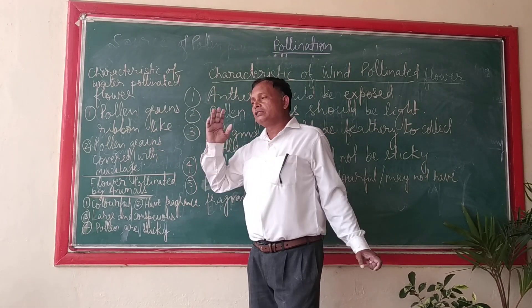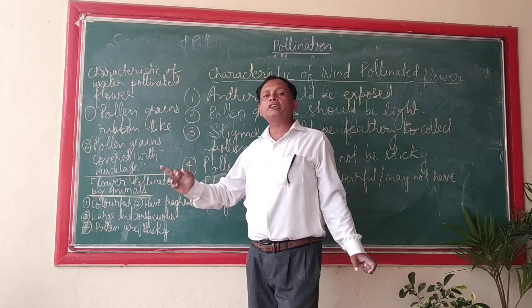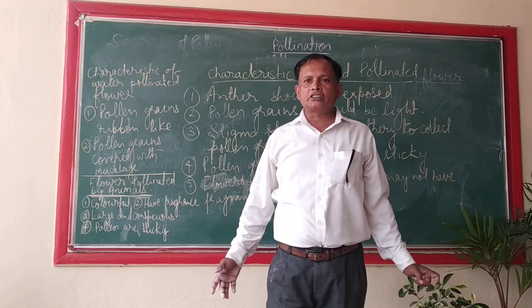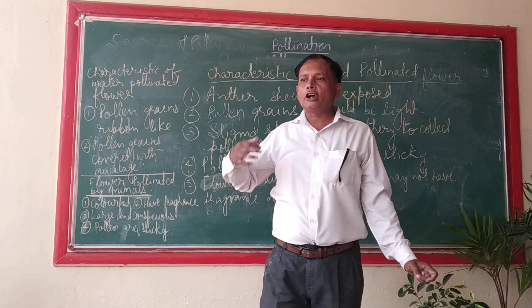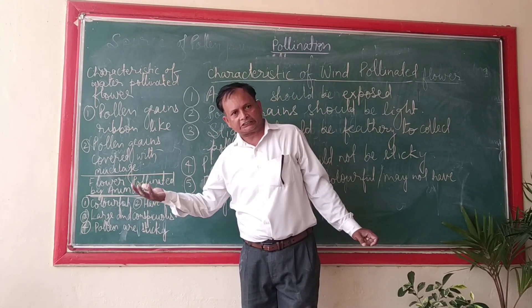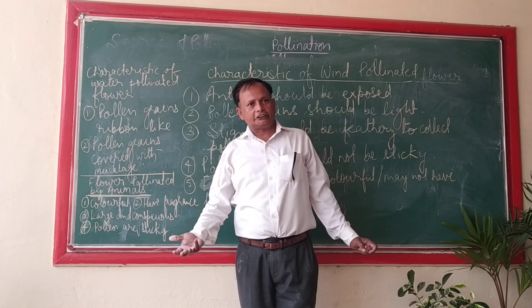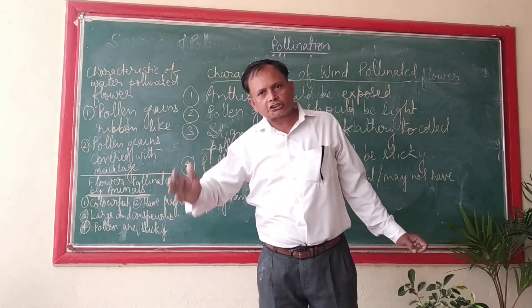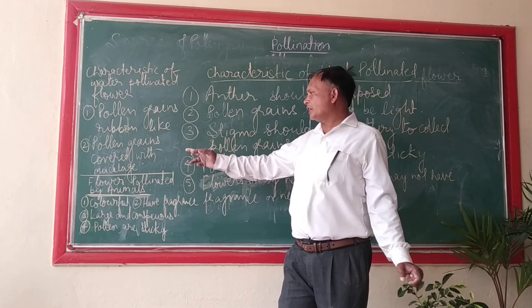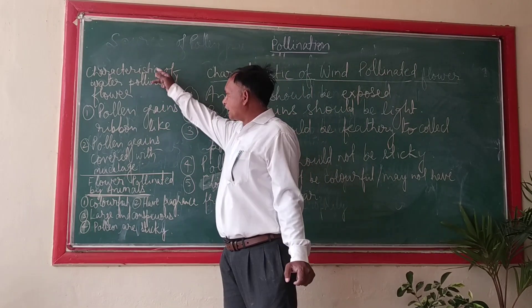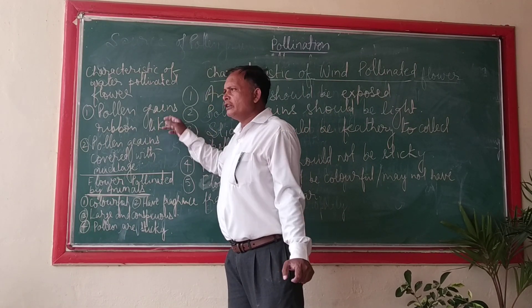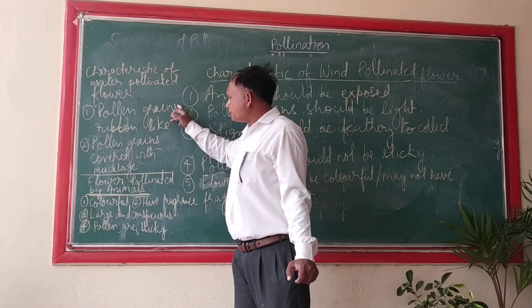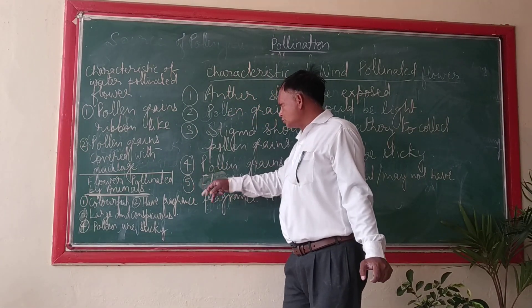The second unique characteristic: pollen grains should be covered with mucilaginous material. If covered with mucilaginous material, they will be protected from getting wet and distorted. In order to prevent their distortion, the pollen grains must be covered with mucilaginous material. These are the two main characteristics unique to water-pollinated flowers.